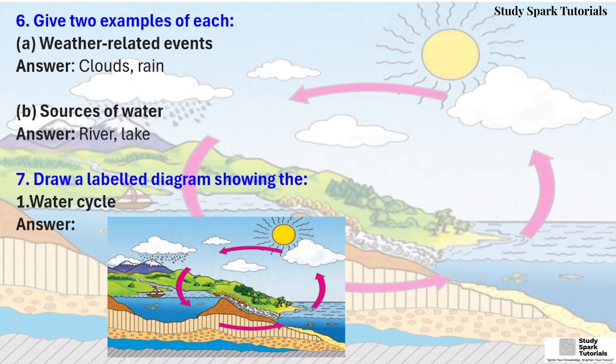Question 6: Give two examples of each. Question A: Weather-related events. Answer: Clouds, rain. Question B: Sources of water. Answer: River, lake.